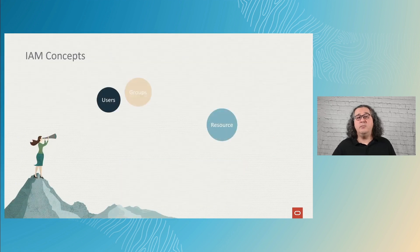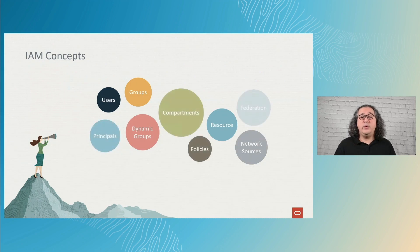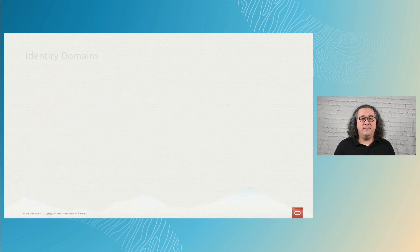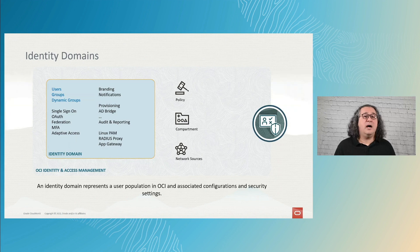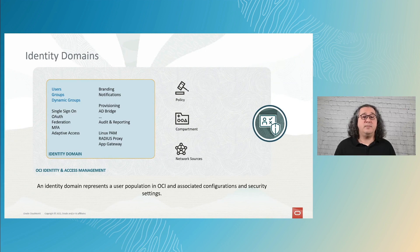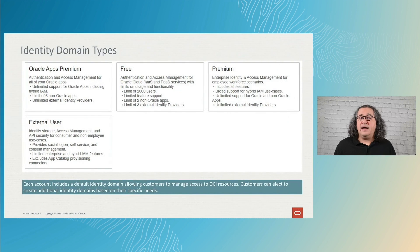To understand more about OCI IAM, we will see the concepts that you need to know in order to make things work. The first concept is identity domains. Identity domains were introduced in November 2021 and changed how OCI works, adding a way to represent different user populations, each in their respective grouping, making it easier to manage and organize. Identity domains come in different types according to what you need and the requirements.